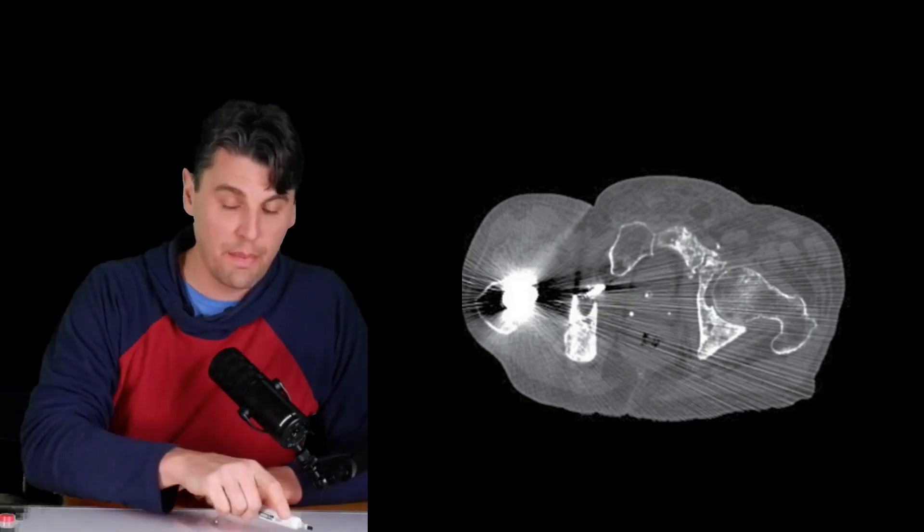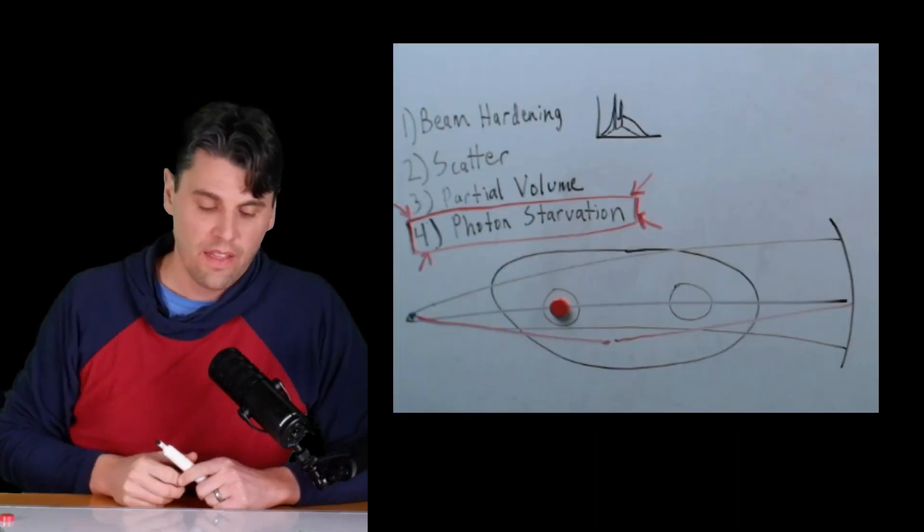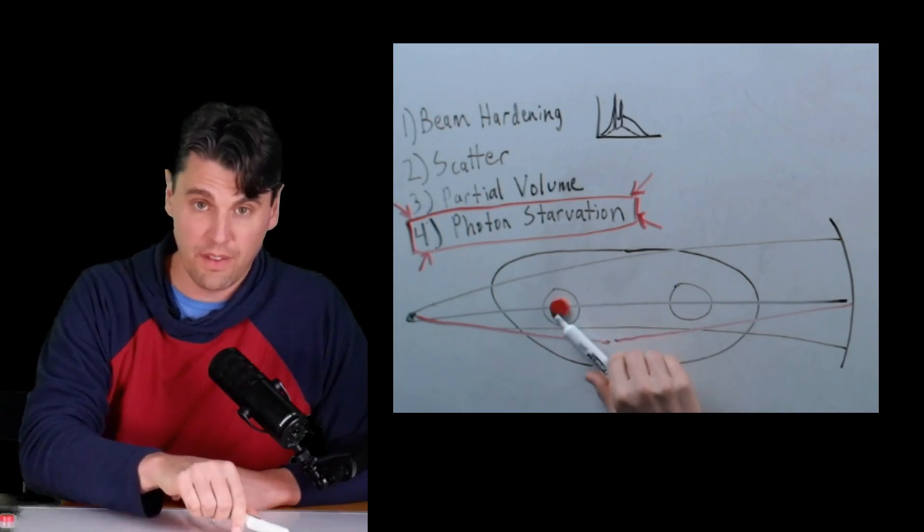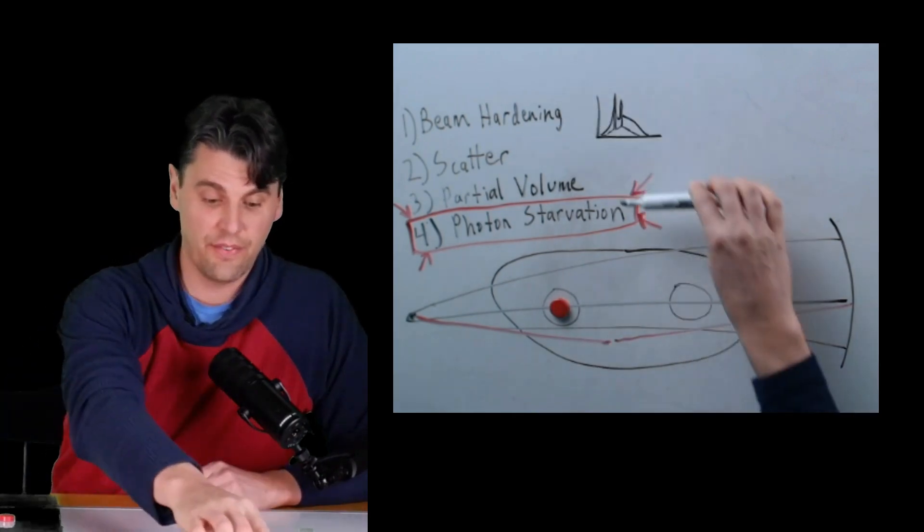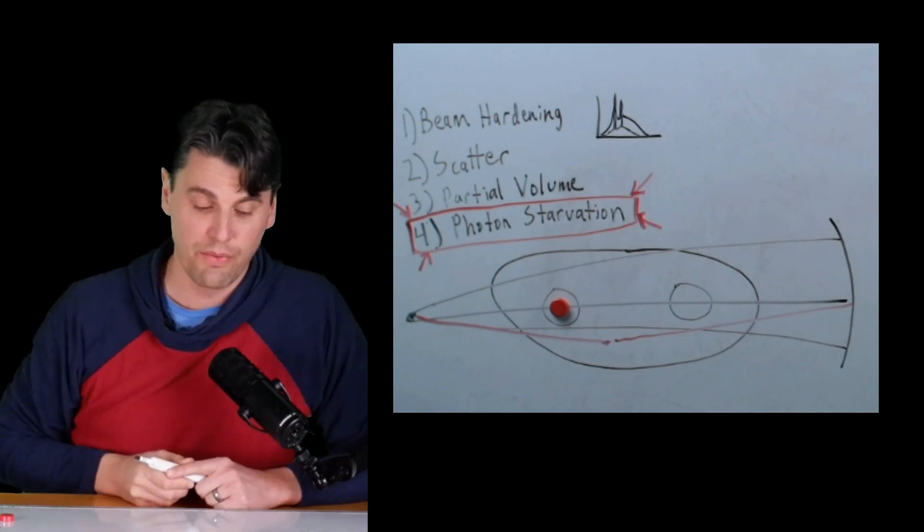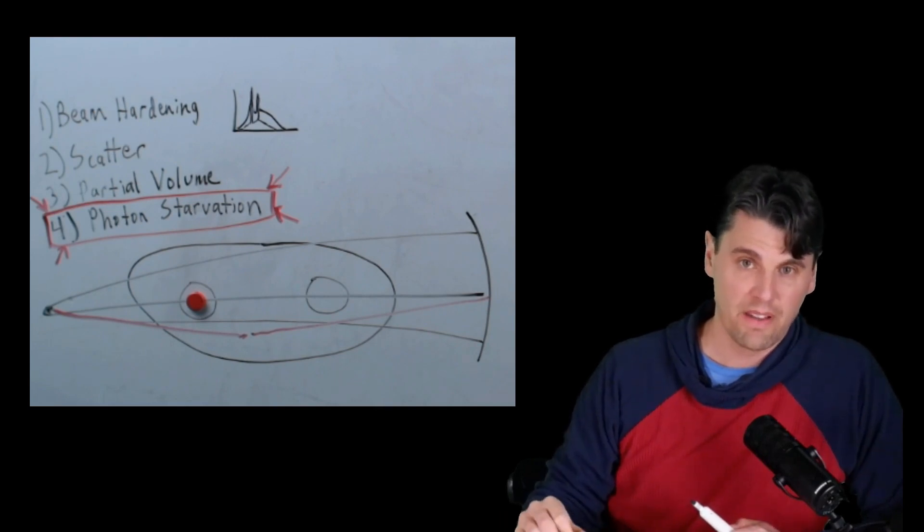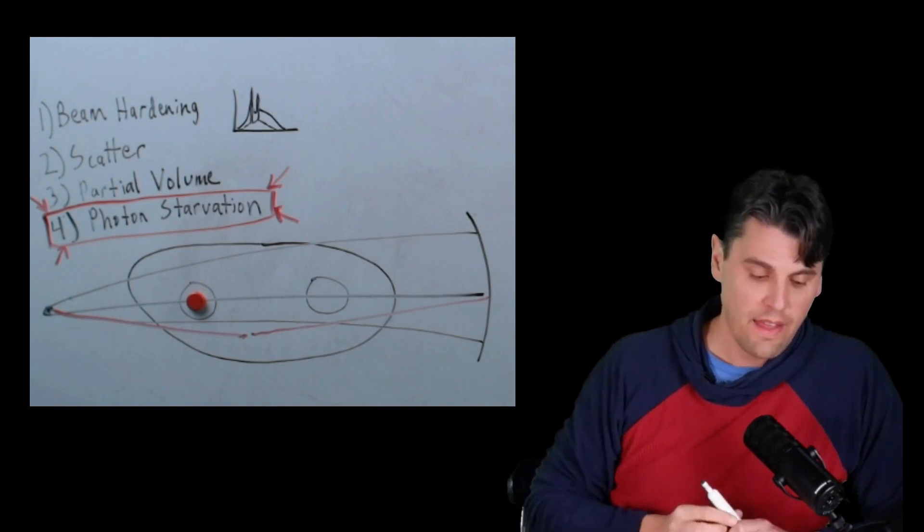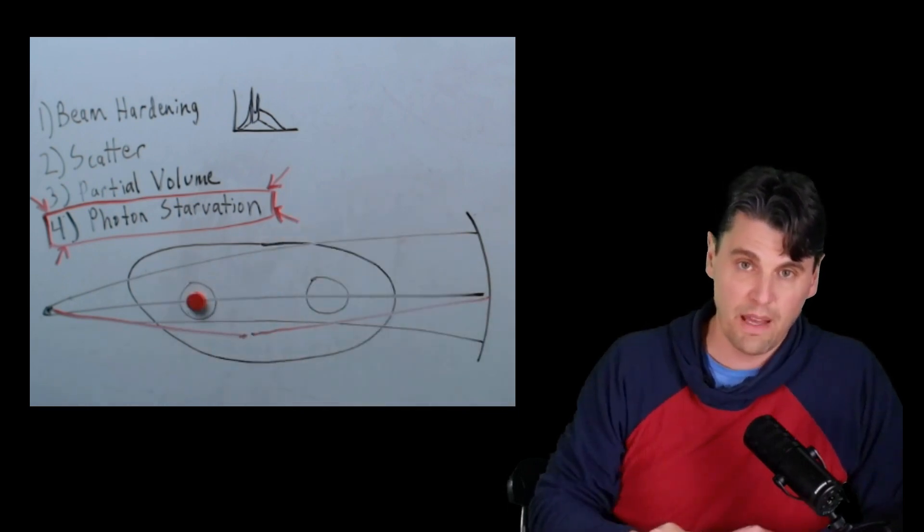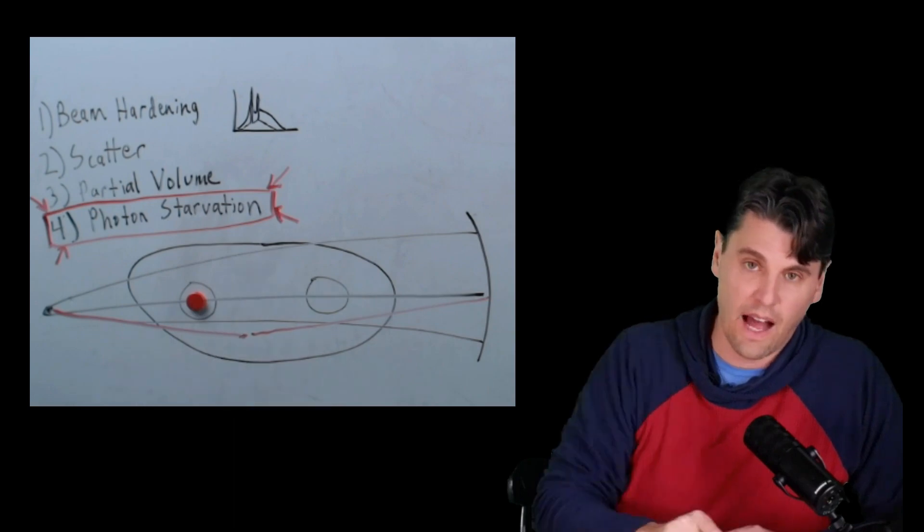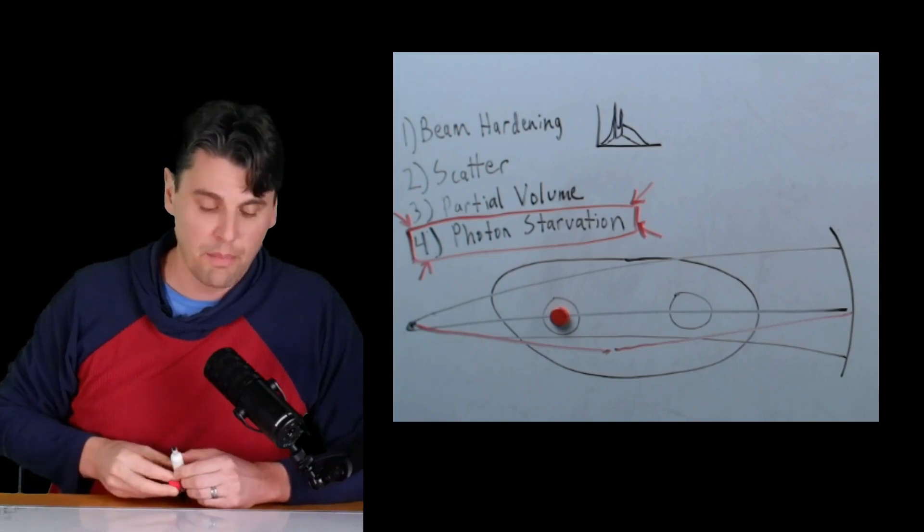If you have a single metallic object which is very highly attenuating, what you're generally going to see is artifacts that are originating from the area of this metallic object and will come off in streaks around this metallic object. That's due to these different causes here, and especially due to photon starvation. This is made even worse in the case that you have multiple highly attenuating metallic objects. So if you have just one object, then you still have relatively good measurements of all the different view angles in your projection space, as long as you're away from the metallic object a little bit. So you'll get some streaks coming off, and they'll start to corrupt things around that metallic object and make streaks around it.